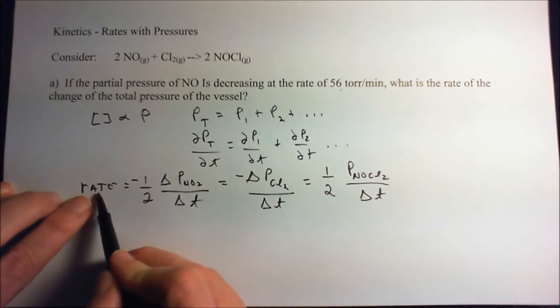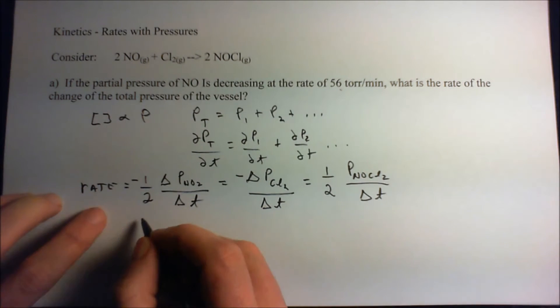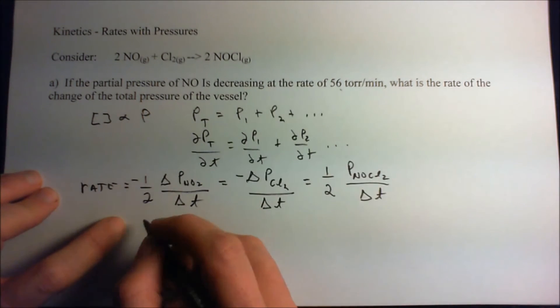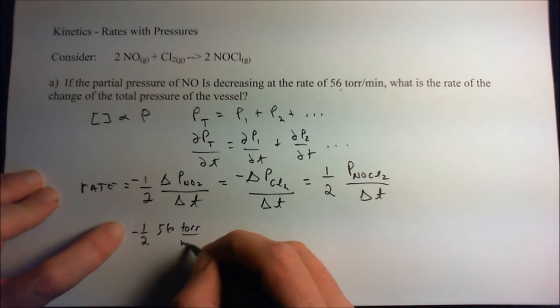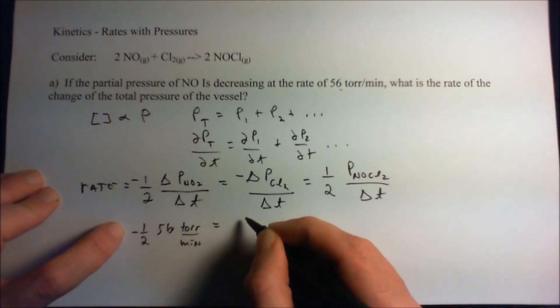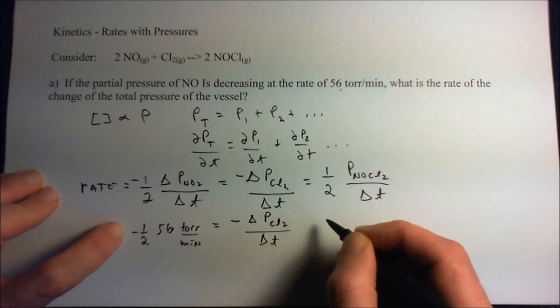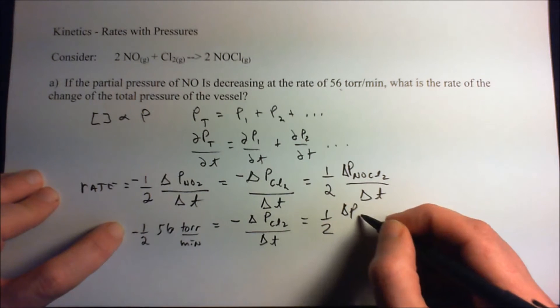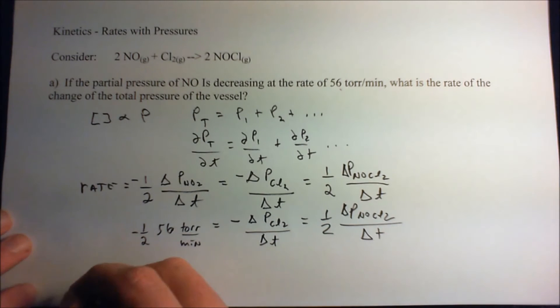Now recall, this 56 torr per minute—that's this term right there. So we can substitute that in because now we're really only interested in the different partial pressures. If we substitute in 56 torr per minute, that is minus one-half times 56 torr per minute, and that is equal to the change in the partial pressure of chlorine with respect to time, and that's equal to one-half the change of pressure of NOCl₂ with respect to time.